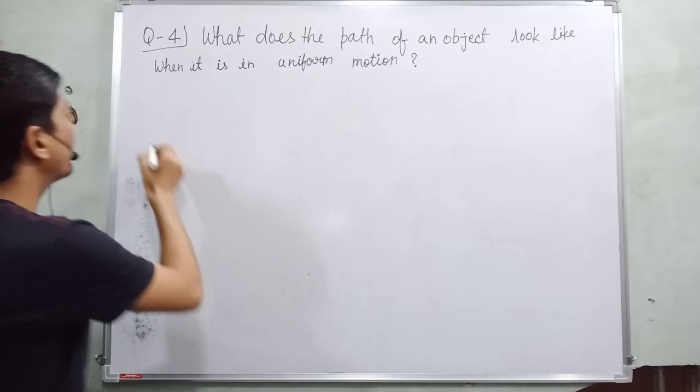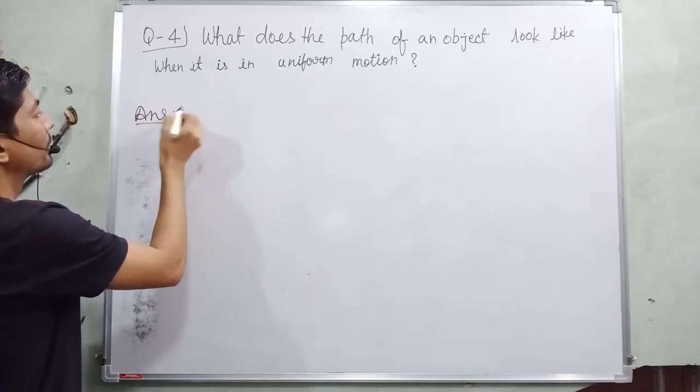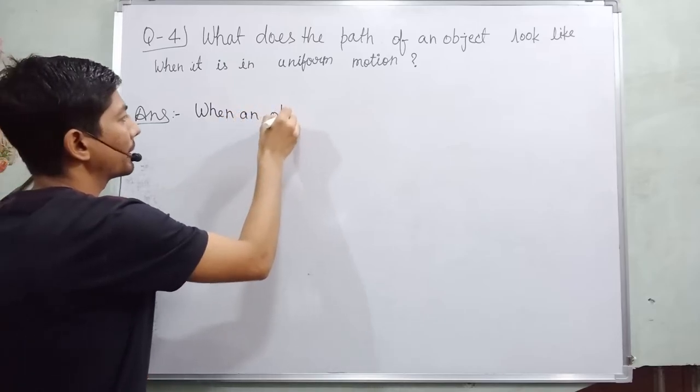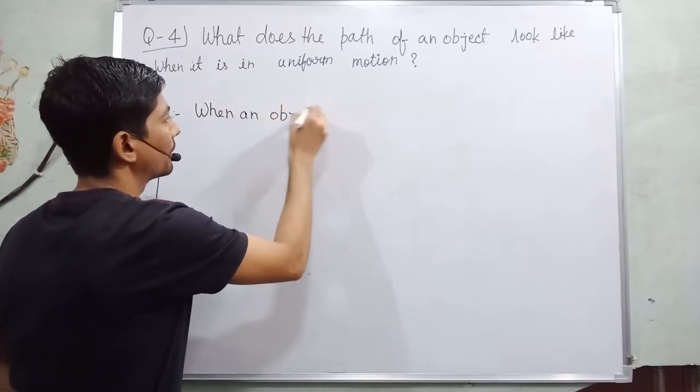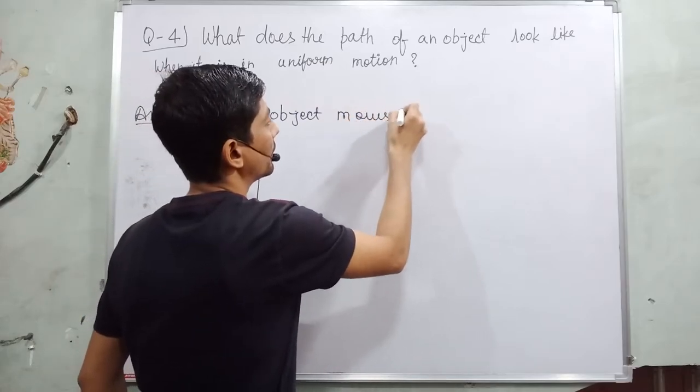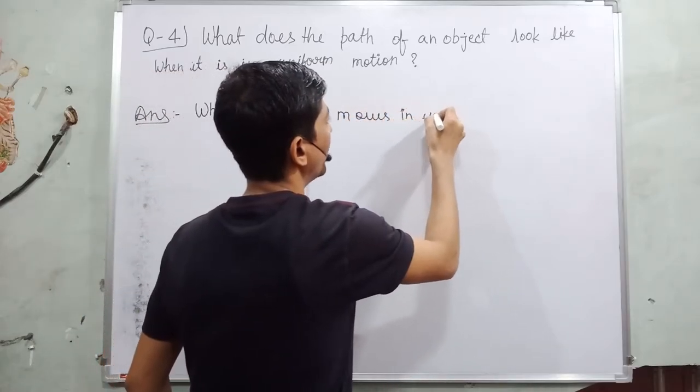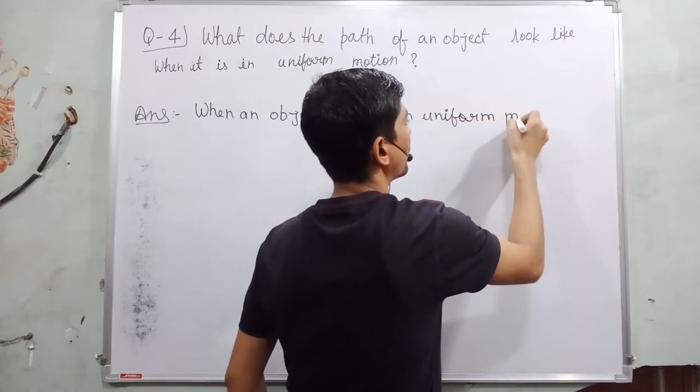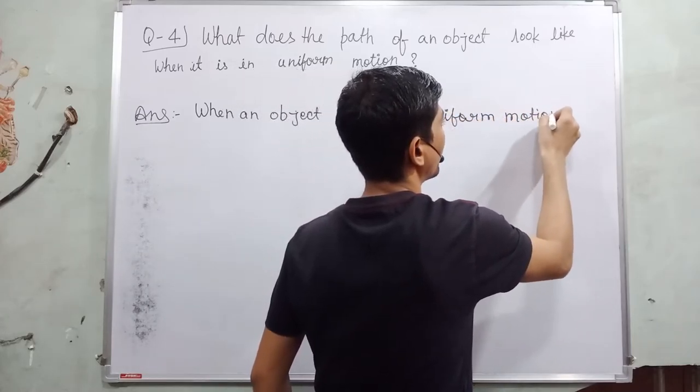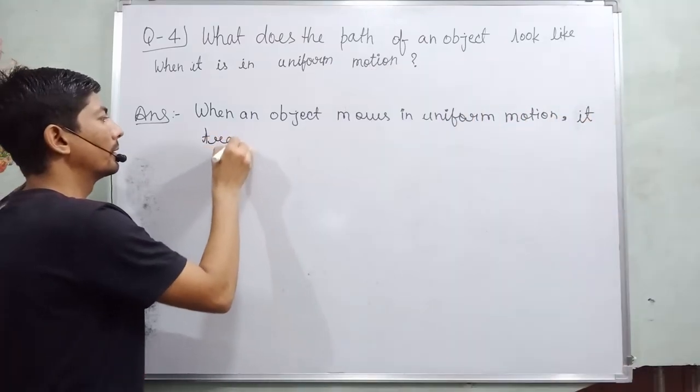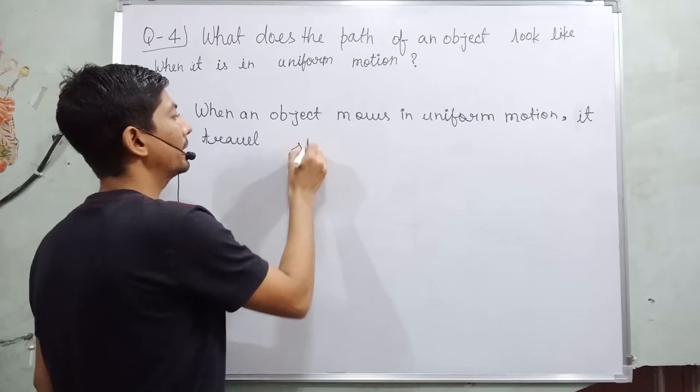Okay, so answer will be: When an object moves in uniform motion, it travels straight line path.